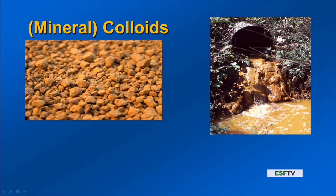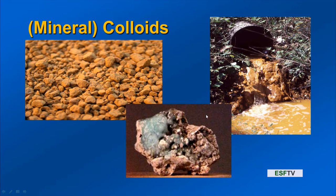Here's a picture of precipitated ferrihydrite — it gives soil a brown color; this is actually precipitating out and you can see the brown lining this rock. And here's a picture of allophane.